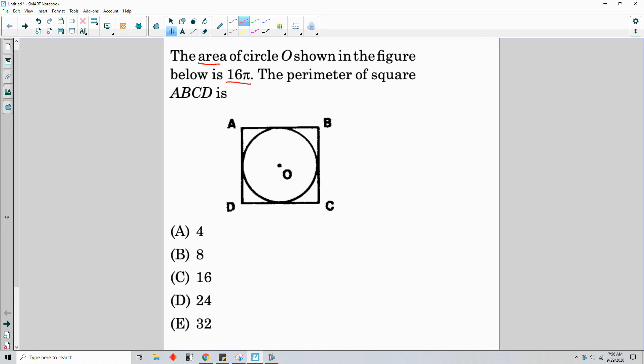Area is 16π. Area equals πr². So if area is 16π, and that equals πr²,